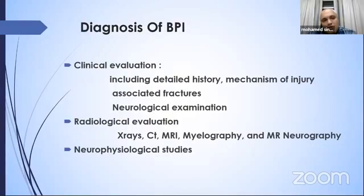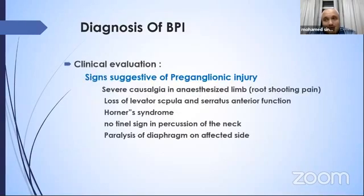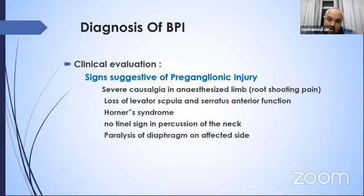Diagnosis of brachial plexus injury includes clinical evaluation, radiological evaluation, and neurophysiologic studies. In clinical evaluation, certain signs are suggestive of preganglionic injury: severe causalgia in an anesthetic limb (loss of sensation but severe root-shooting pain), loss of levator scapulae and serratus anterior function, Horner's syndrome, no Tinel sign on percussion of the neck, and paralysis of the hemidiaphragm. All these signs suggest preganglionic injury.